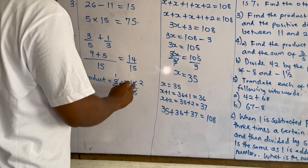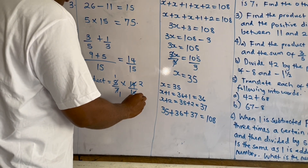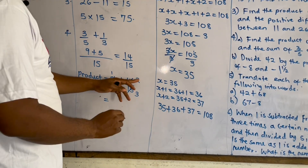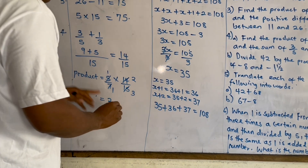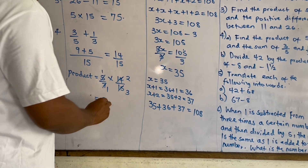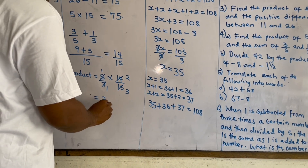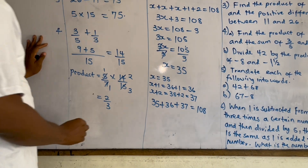Simplifying five-sevenths times fourteen-fifteenths: seven goes into itself once and into fourteen twice, and five goes into fifteen three times. So the answer is one times two over one times three, which gives us two-thirds.